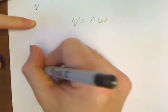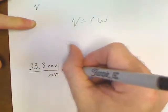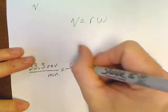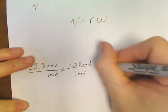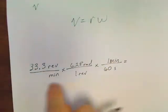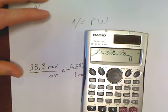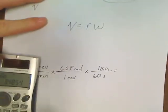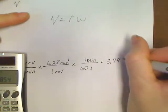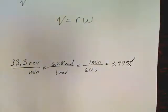So let's just go convert that. 33.3 revs per minute, you should be able to convert this. 6.28 rads per one rev, and then there are 60 seconds for every minute, at least I hope. And everything cancels. So 33.3 times 6.28 divided by 60 is 3.49. This would be rads per second. So now I've got my speed in radians per second.